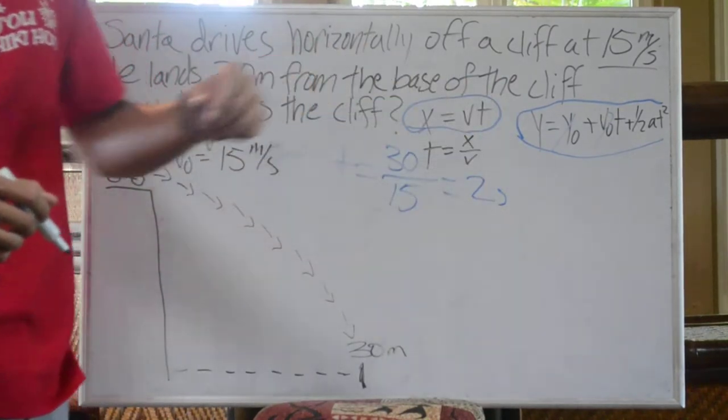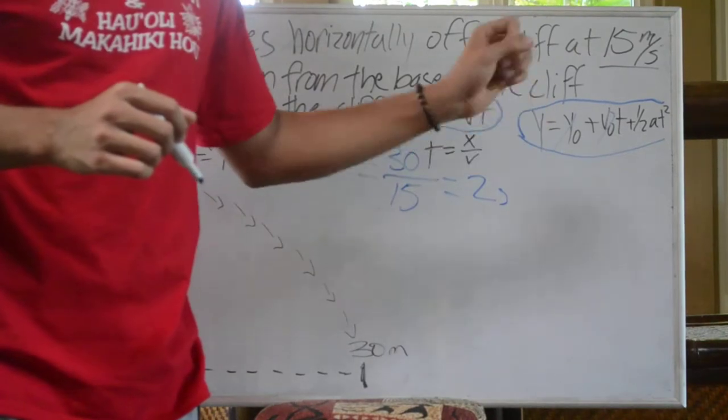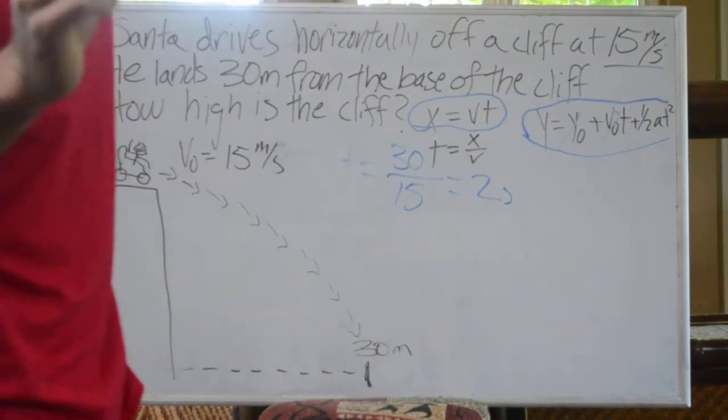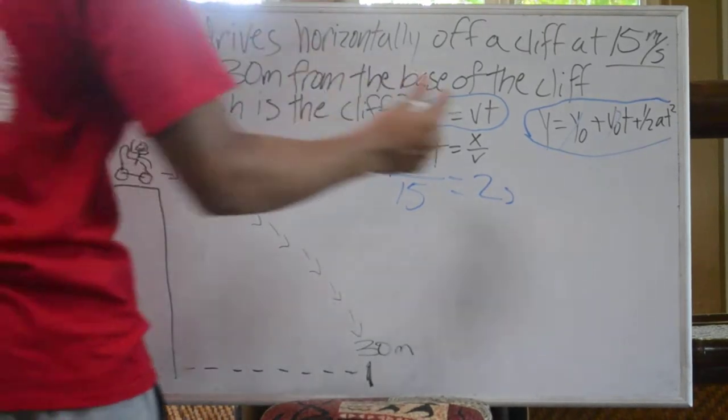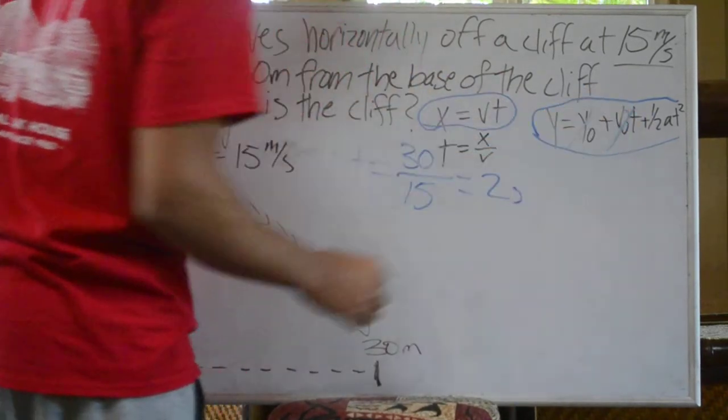Now we must look at the y-axis. The equation for the y-axis is y-not plus v-not plus one-half at squared equals y. So our y-not is zero, we can get rid of that. Our v-not is also zero, we can get rid of that.